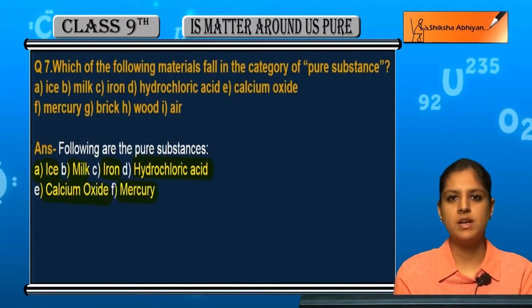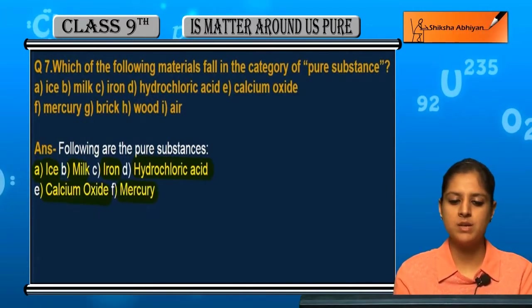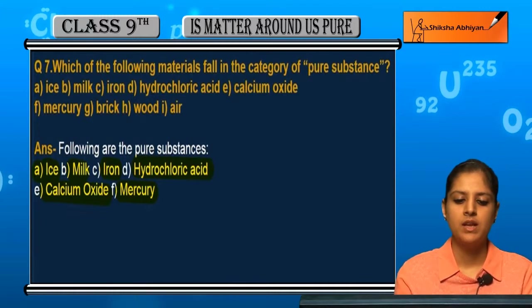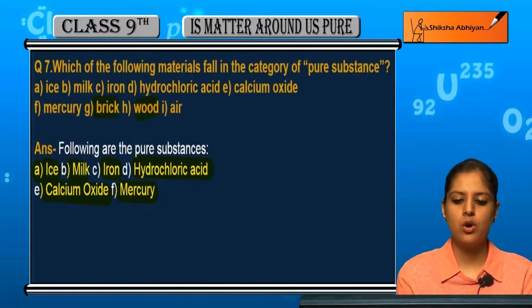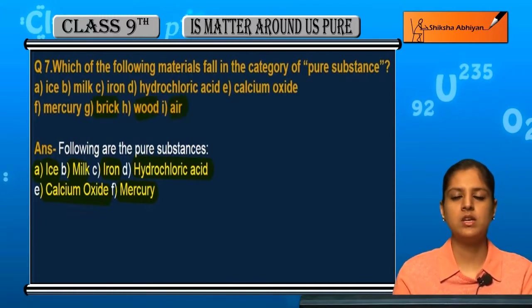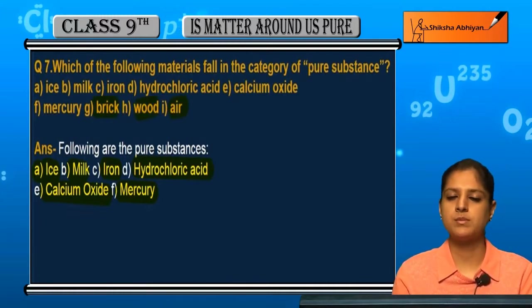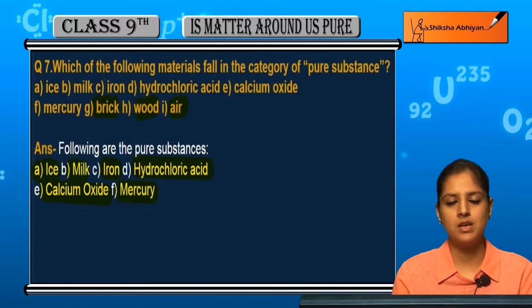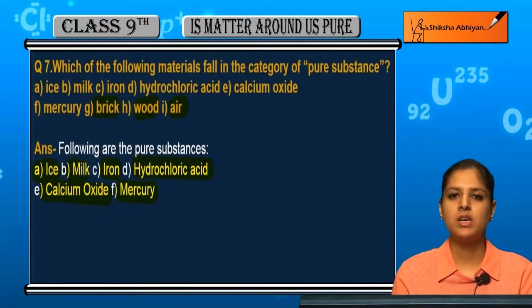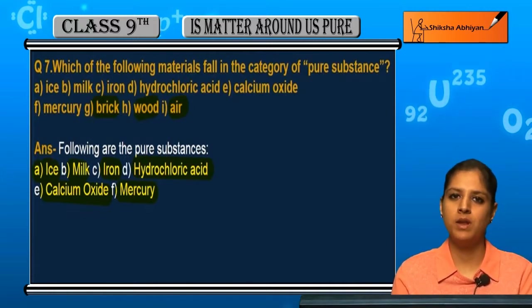Mercury ek element hai, jo bhi ek pure substance hai. Lekin brick, wood, aur air yeh teeno pure substances nahi hain, kyunki yeh alag-alag pure substances ko mila kar bani hui hain.